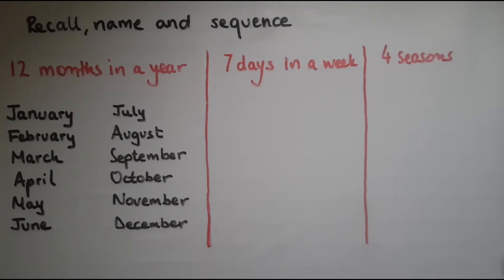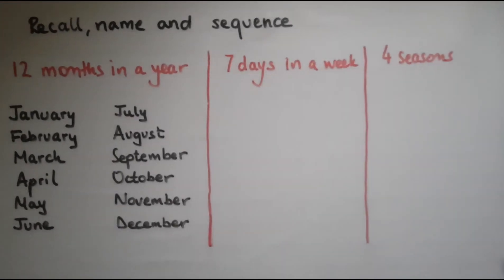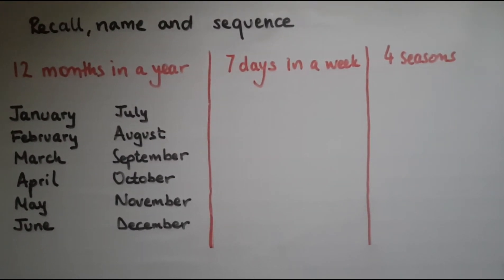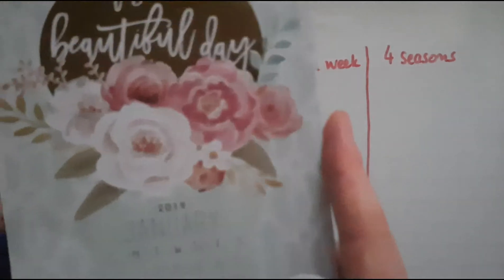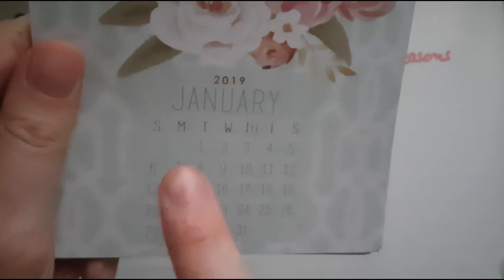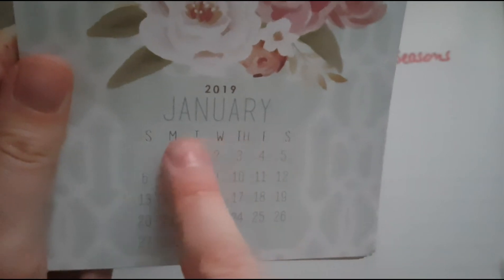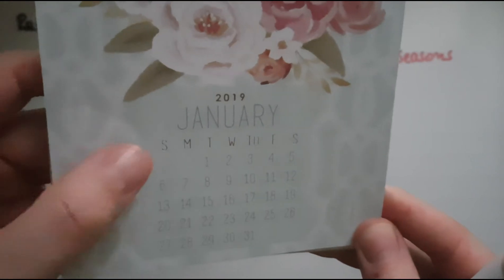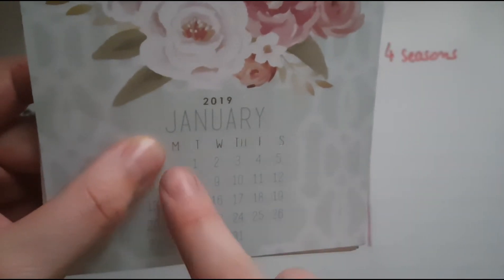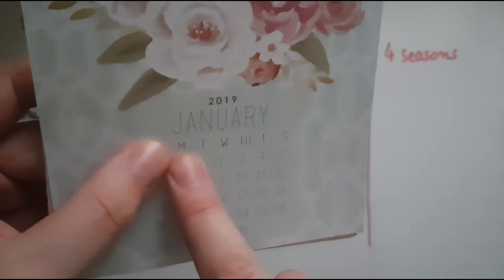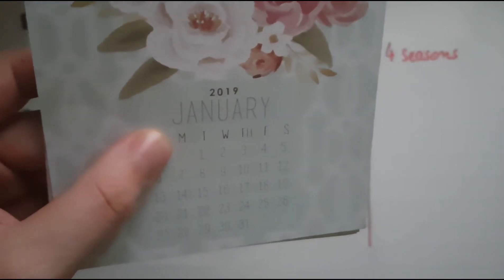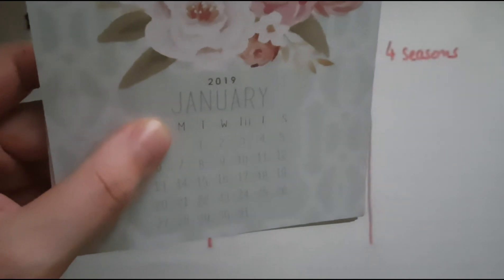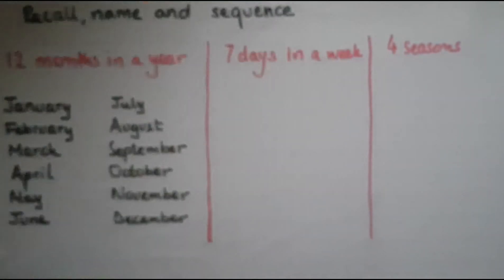So I'll put them in order. Try and recall the order of the months as well by practicing. Now we'll look at the days in a week. Going back to my calendar again, underneath the month there are the days of the week. Some calendars start with Sunday. However, the first day of the week is now widely accepted as being Monday — that's the first day when you go back to school or work or college.